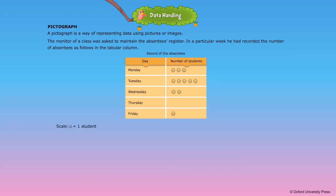Scale: 1 smiley is equal to 1 student. A. How many students were absent on Monday? 3 students were absent on Monday.